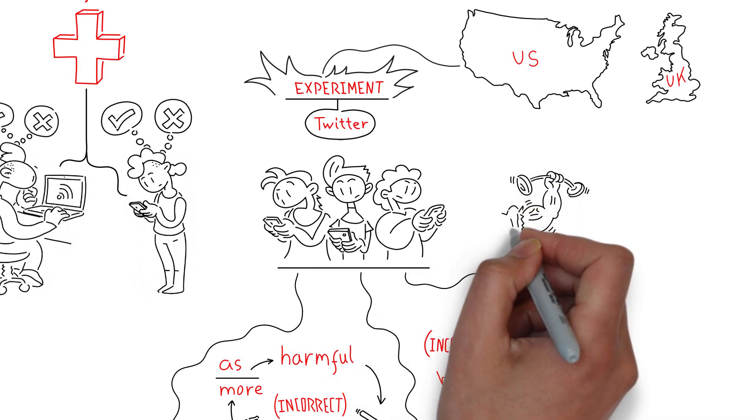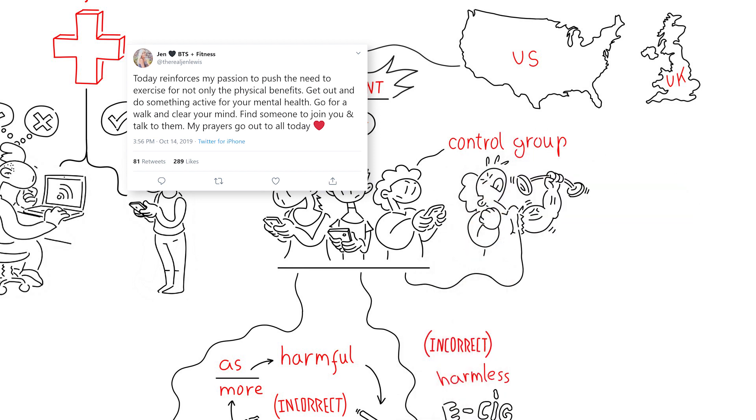A third group were shown accurate messages about physical activity. This is known as the control group.